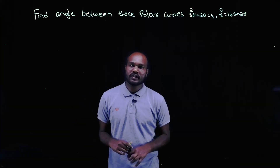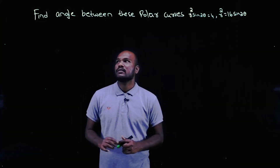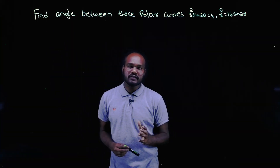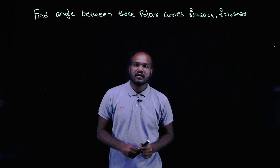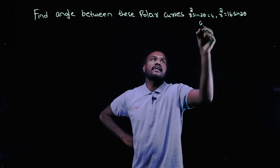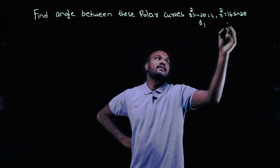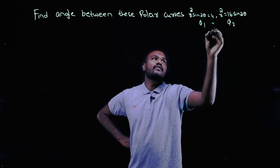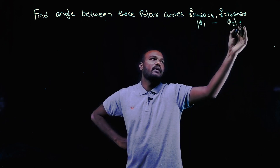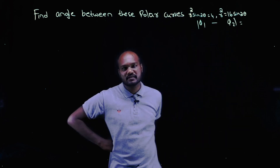Hey guys, welcome to another video. In this video series we are solving 21 scheme M1 questions from the first module, that is polar curves. Make sure to subscribe this channel for more videos like this one. What is given in the question: find the angle between the polar curves. To find the angle, we have to find φ1, we have to find φ2, and we have to do φ2 minus φ1 or φ1 minus φ2 to get the answer.